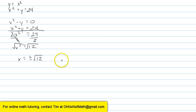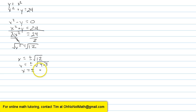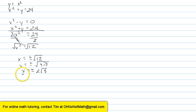This can be simplified. This can be written as x equals plus or minus the square root of 4 times 3. The square root of 4 is 2, so the 2 can come out and we have the square root of 3. So my two x values are positive 2 times the square root of 3 and negative 2 times the square root of 3.